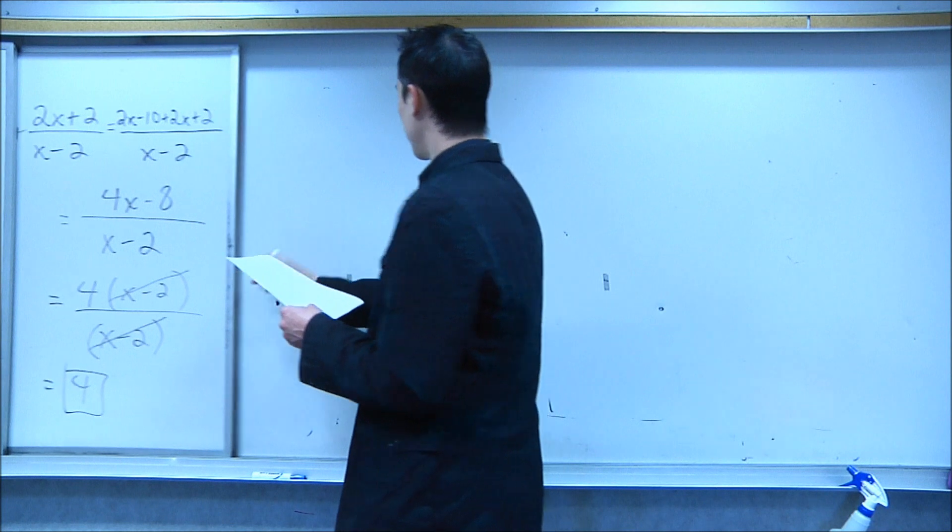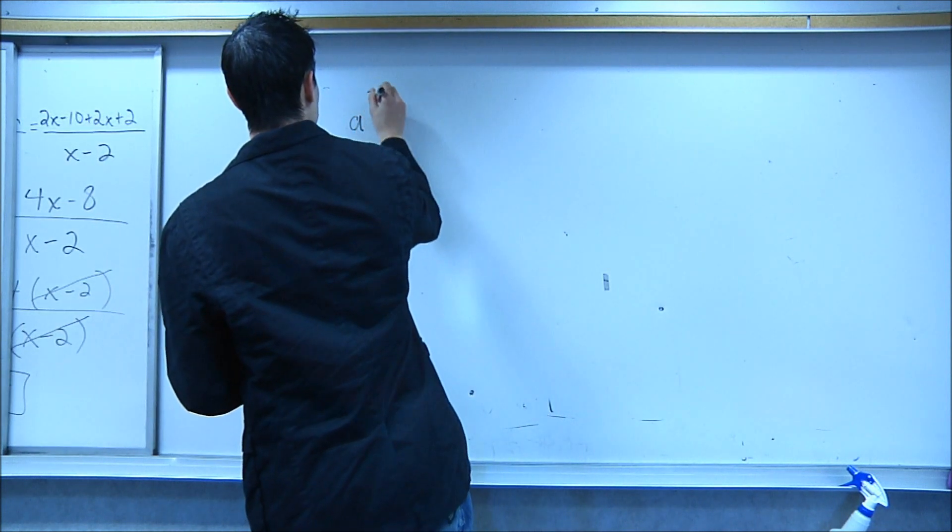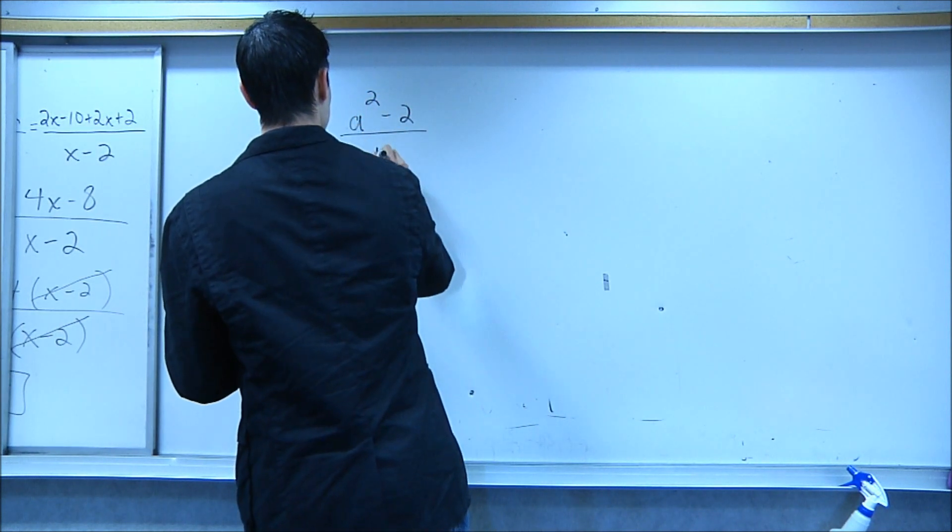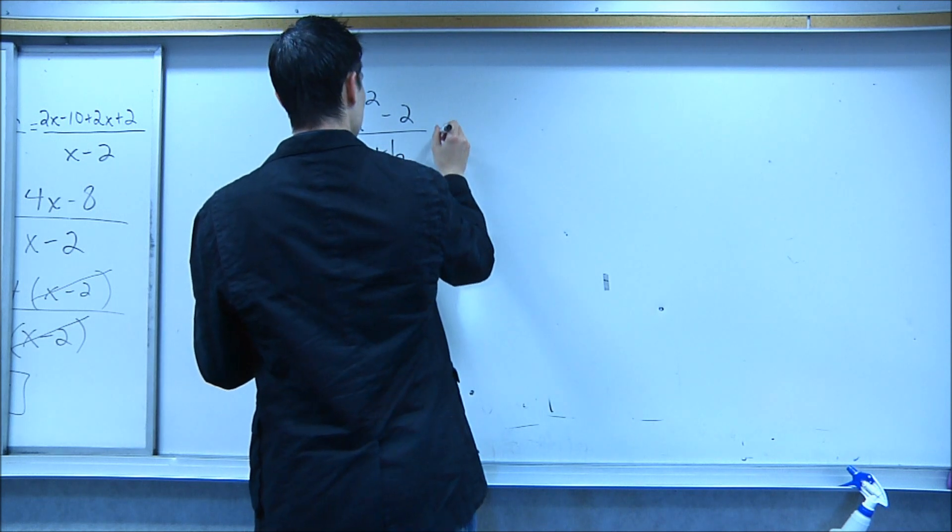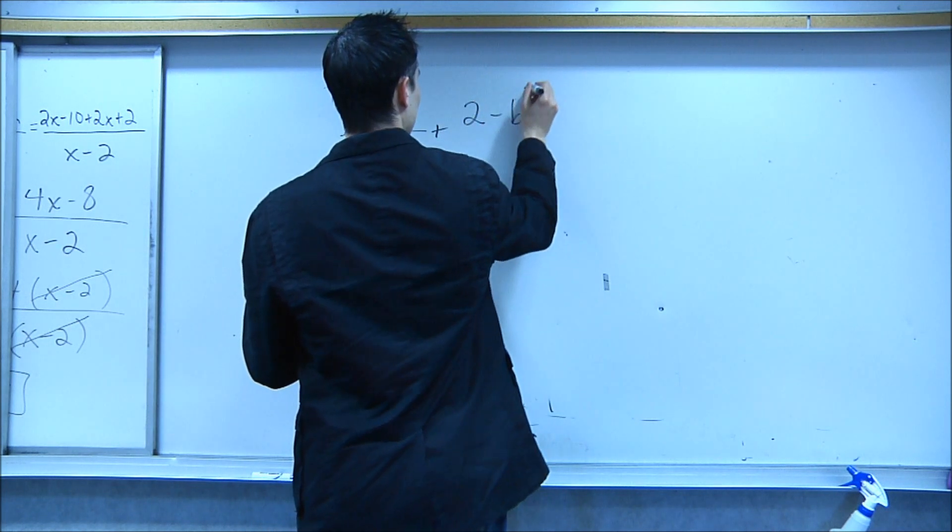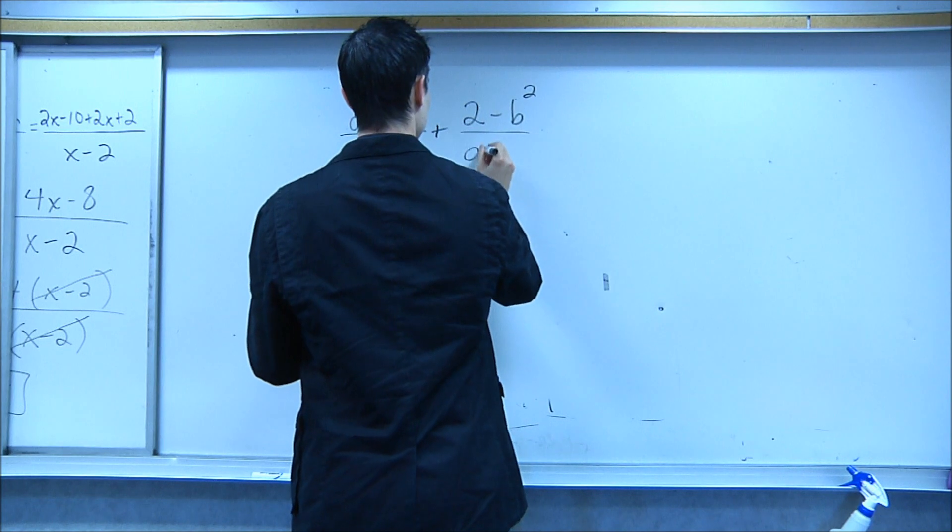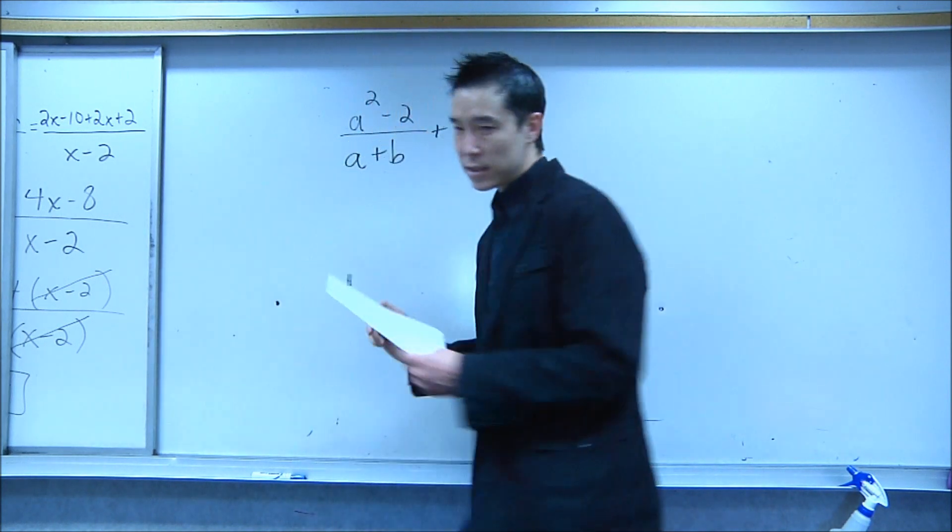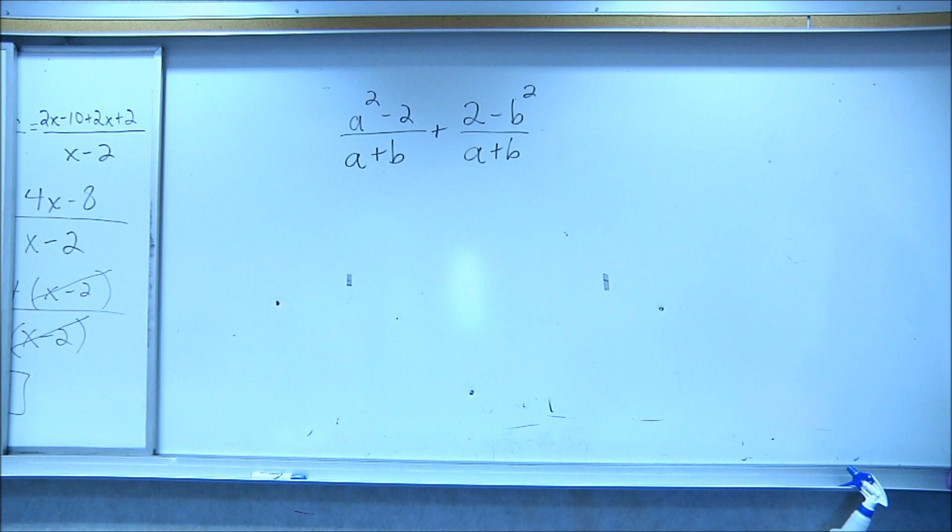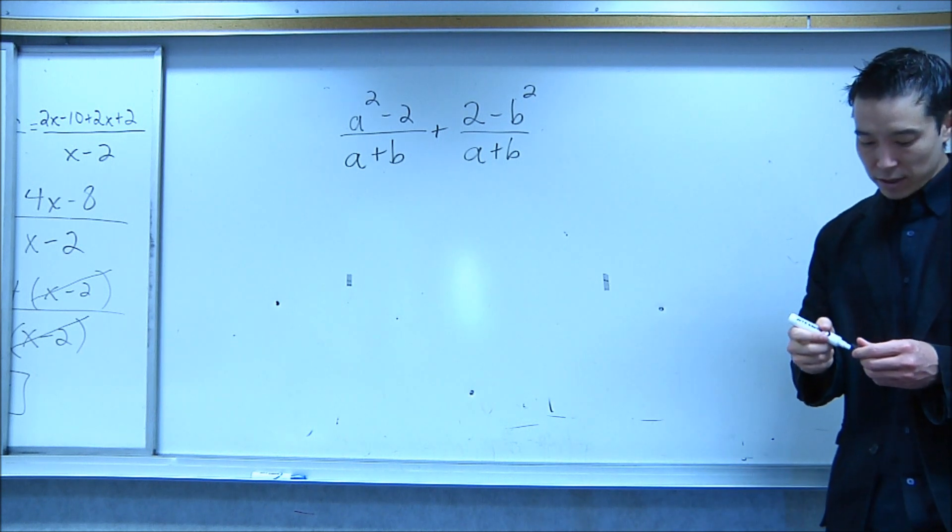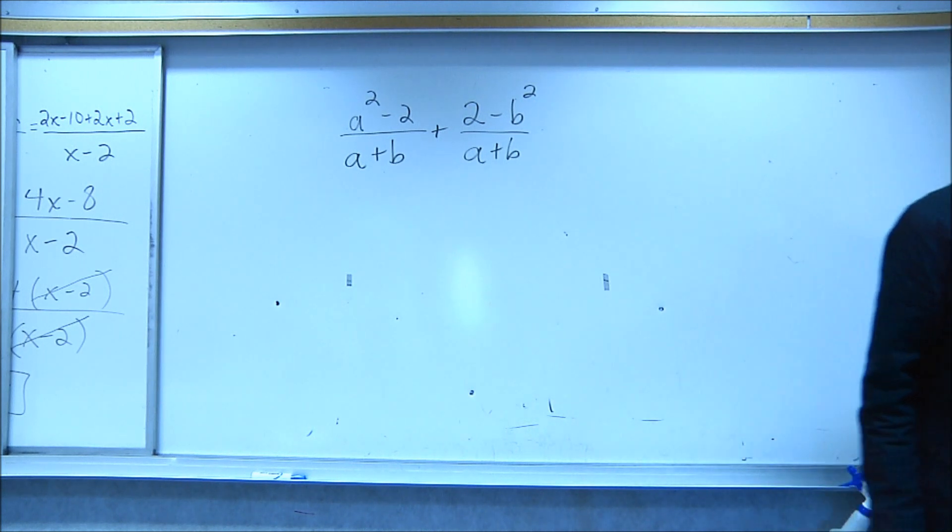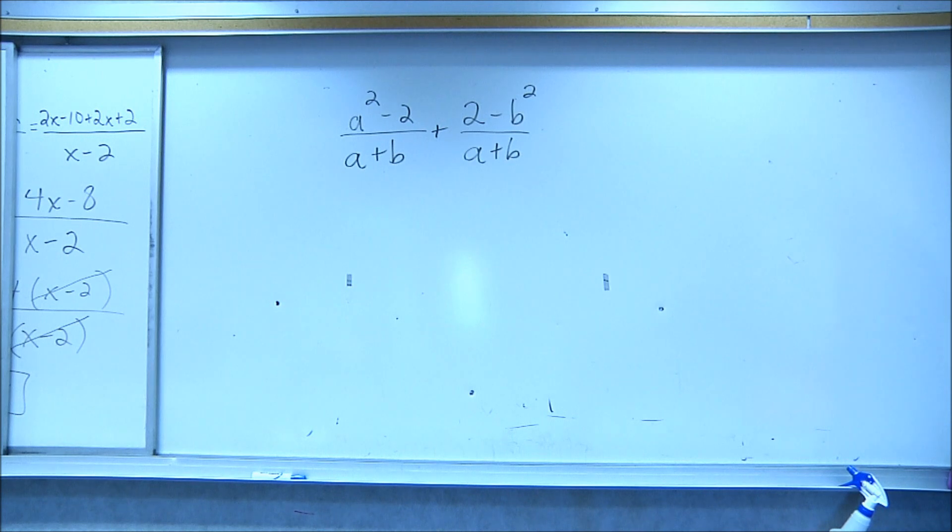Okay, let's try another one. a squared minus 2 over a plus b plus 2 minus b squared over a plus b. Alright, you guys try that one out, so I'll give you a little bit of time. They both have a plus b as denominators, so do exactly what we did in the last problem.